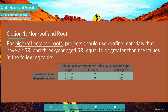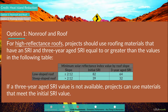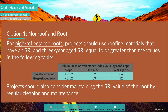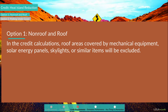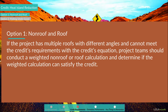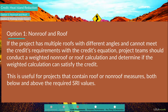For high-reflectance roofs, projects should use roofing materials with an SRI and three-year aged SRI equal to or greater than the values in the displayed table. If a three-year aged SRI value is not available, projects can use materials meeting the initial SRI value. Projects should also maintain the SRI value through regular cleaning. Roof areas covered by mechanical equipment, solar energy panels, skylights, or similar items are excluded. For projects with multiple roofs at different angles, a weighted non-roof or roof calculation can be used.